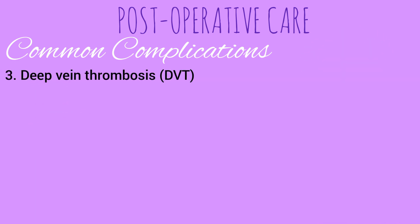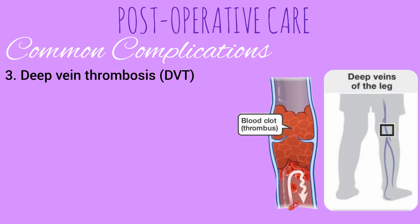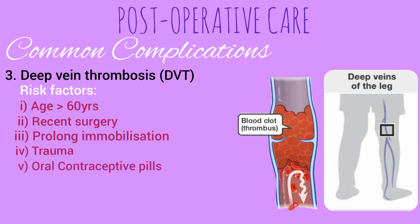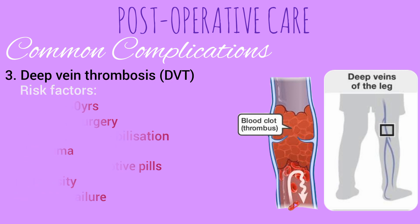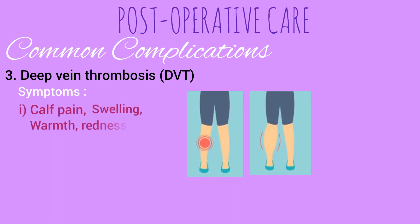Next is deep vein thrombosis or DVT. It occurs when a blood clot forms in a vein deep in the body; mostly it occurs in the lower leg or thigh. It can develop in patients older than 60 years of age, after recent surgery, due to prolonged immobilization like bed rest, trauma, oral contraceptive pills, obesity, and heart failure, all of which also increase the risk of DVT.